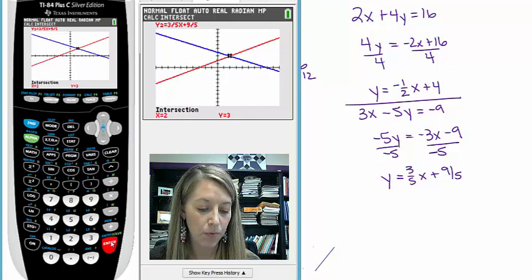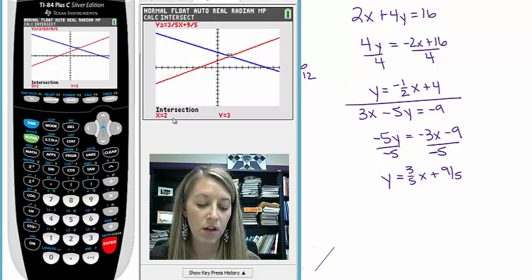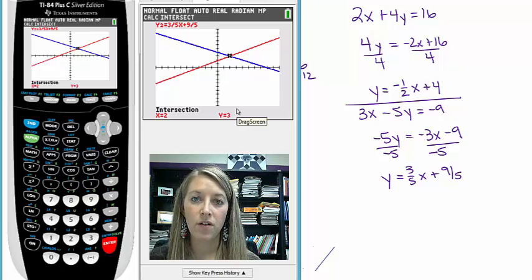And basically hit enter three times. Bing, bang, boom. And so I find the point of intersection is (2, 3). And therefore, we have confirmed that we have the correct answer.